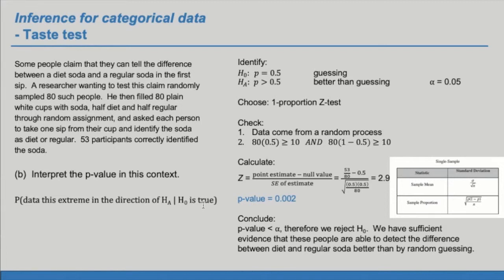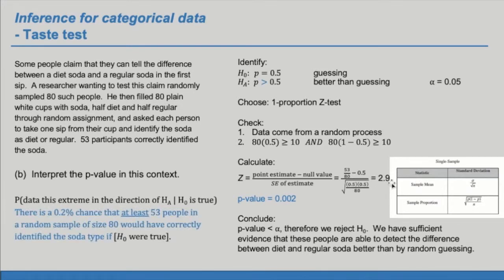So the logic of our hypothesis test is to assume that H sub 0 is true. Plug this value into our calculations and find the z-score. In this case, shaded to the right. So we could similarly say that there is a 0.2% chance we would get a z-score this big if H sub 0 were true. And that's equivalent to saying that there's a 0.2% chance that we would get a p-hat this big if H sub 0 were true. So that at least 53 people in a random sample of size 80, note the sample proportion here, would have correctly identified the soda type if H sub 0 were true. If they were just randomly guessing, in other words, if p equals 0.5.